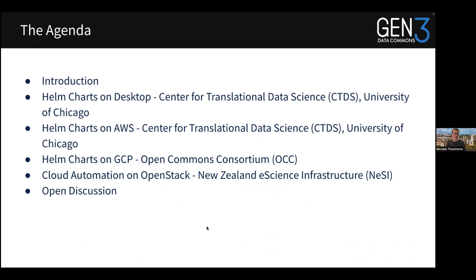The agenda for today: we'll set up the problem of spinning up your own Gen3 data commons, talk a bit about Gen3 to set the groundwork. We'll have recorded videos from CTDS members on Helm charts for desktop and AWS. Then the Open Commons Consortium will talk about Helm charts on GCP, followed by a presentation from the New Zealand eScience Infrastructure Group on cloud automation on OpenStack, and then open discussion.